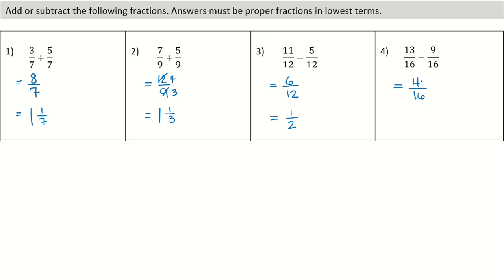Alright, again, correct value, but not lowest terms. So we put another equal sign. One more step to go. These can both be divided by 4. And so we get 1 over 4 in lowest terms.